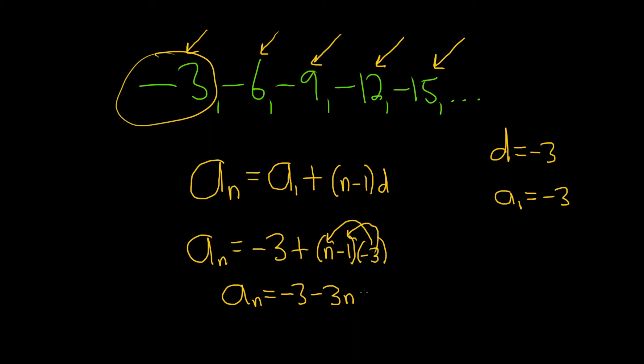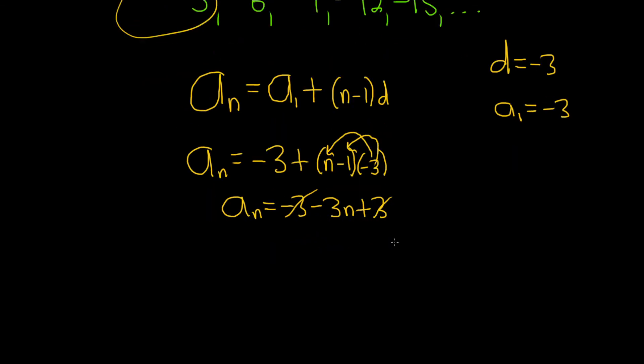And then negative 3 times negative 1 is going to give us a positive 3. Oh, look at that, they cancel. So we end up with a sub n is equal to negative 3 times n.